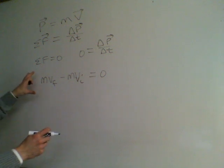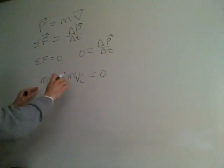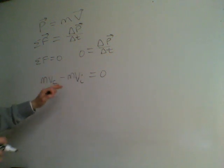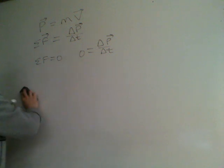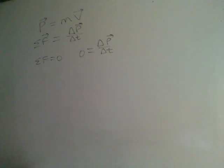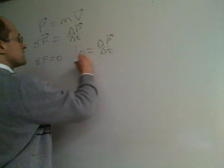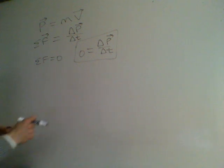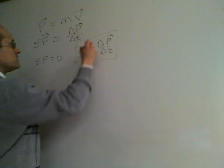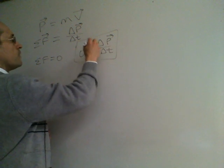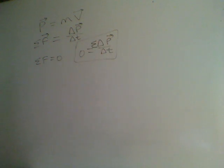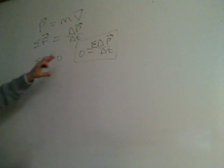This conservation tells us that the velocity doesn't change in time. But this can also apply to a system. If we had a system of particles or objects, we can sum the momentum of all the individual particles in our system, and the total momentum of that system would have to remain constant. To introduce this, we'll look at a very simple example.